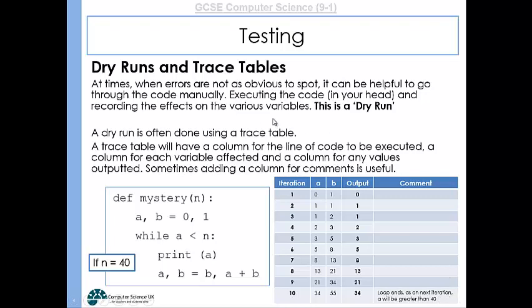So this is a dry run, an example of a dry run, and this is an example of using a trace table to document the dry run.